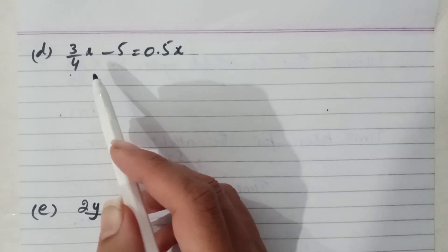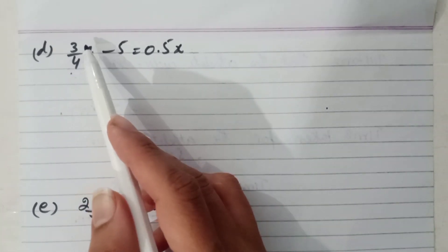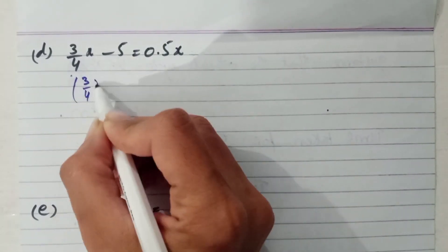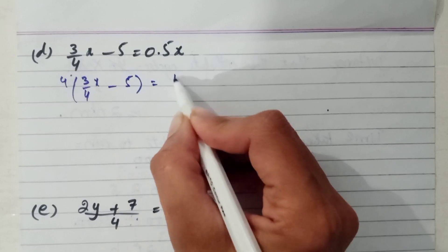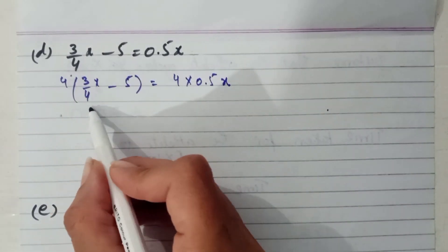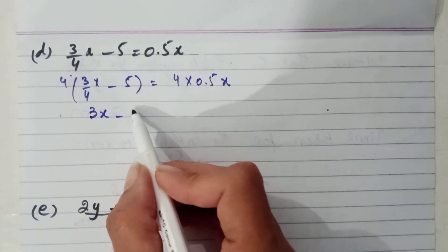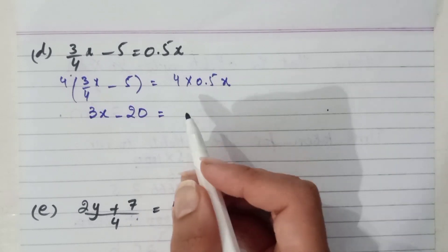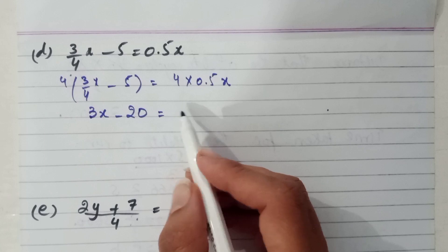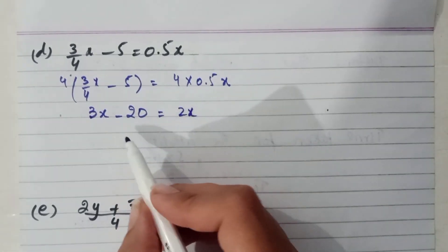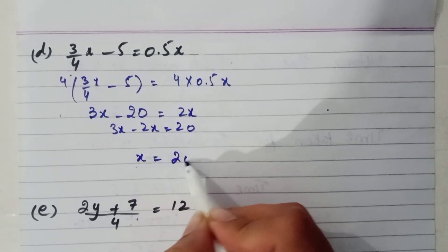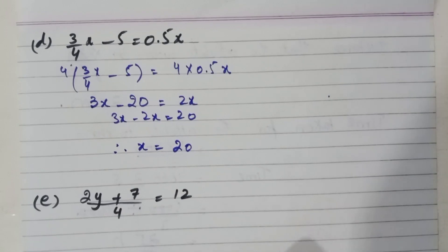Part d: to eliminate the denominator, we multiply the equation by 4 on both sides. 3/4 x multiplied by 4 gives 3x, and 5 multiplied by 4 gives 20, and 4 multiplied by minus 0.5 gives 2. Bringing 2x to that side and 20 to this side, we get x is equal to 20. That is the answer — very simple.